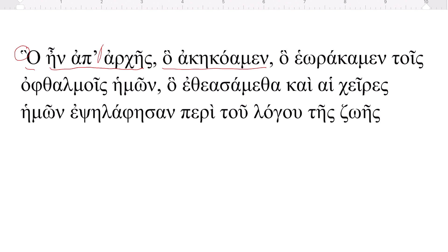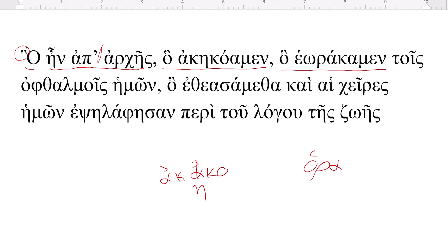What ἀκηκόαμεν meant — you probably just memorized that form, but the verb's root is ἀκυ, from which we get ἀκούω in the present. This word does a double duplication, and then the alpha is lengthened to an eta, so it's the perfect of ἀκούω — 'what we have heard.' Another relative clause: 'what we have seen.' Ἑωράκαμεν is another form you probably memorized; it's from the root ὁράω and gets a double augment where you add the epsilon and then lengthen the omicron to omega. So ἑωράκαμεν is the perfect of ὁράω — 'what we have seen.'